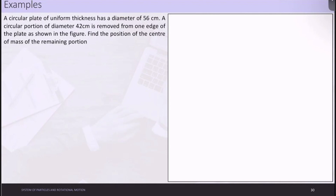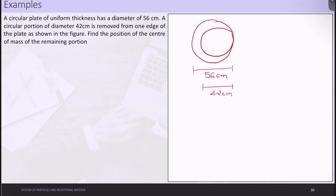The question states that a circular plate of uniform thickness has a diameter of 56 centimeters, and a circular portion of diameter 42 centimeters is removed. We need to find the position of the center of mass of the remaining portion. The center of mass in the y-direction would be 0 because there is no shifting done. We just need to calculate the change in the center of mass in the x-direction.